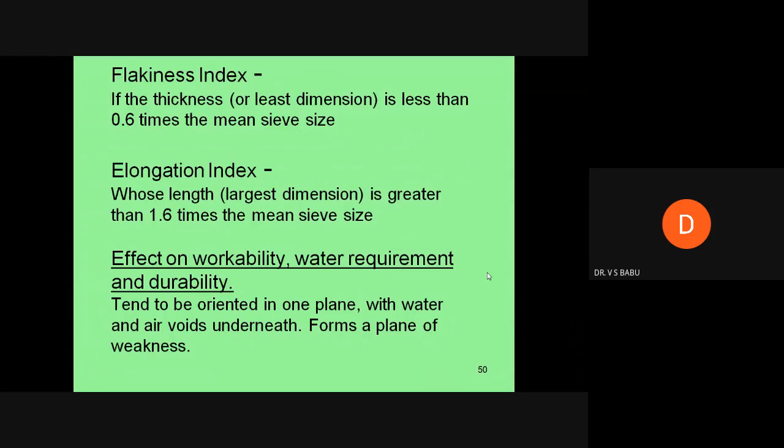Well-rounded aggregates require less water, so workability will be more. Flakiness index: if the thickness is less than 0.6 times the mean sieve size, it's flaky material. Elongation index: if the length is greater than 1.6 times the mean size.